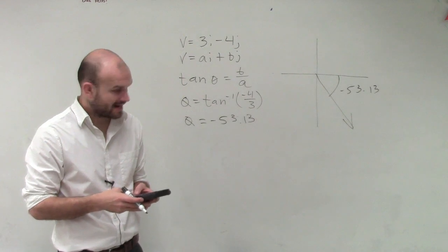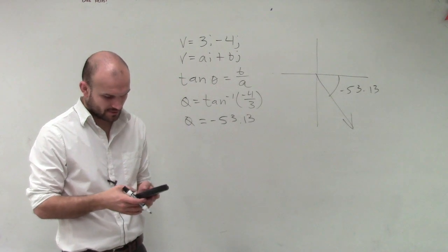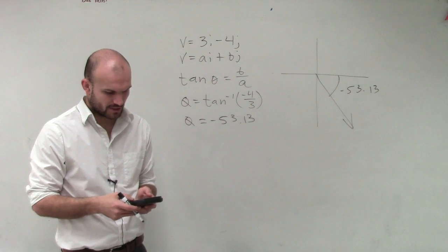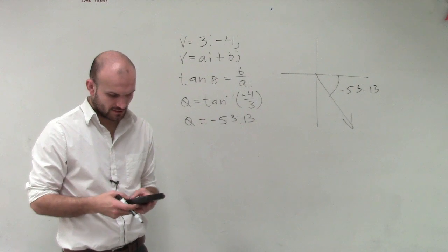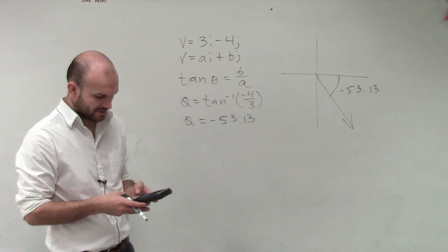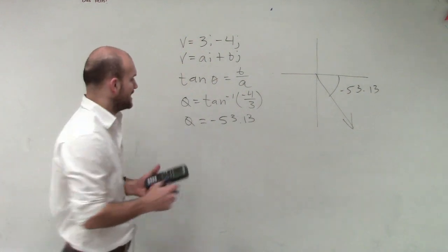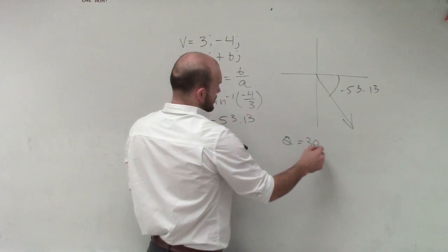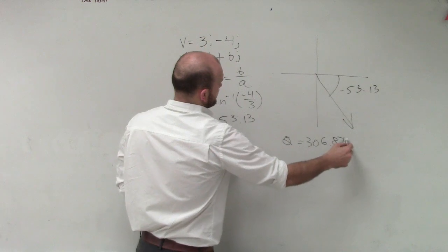So I just do 360 minus 53.13. And therefore, I get now my angle is going to be theta equals 306.87 degrees.